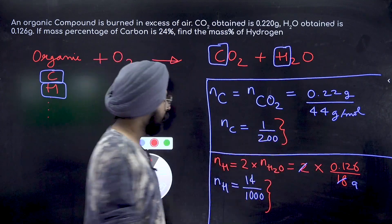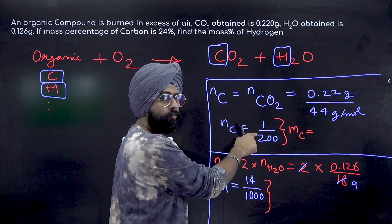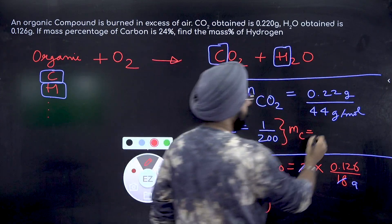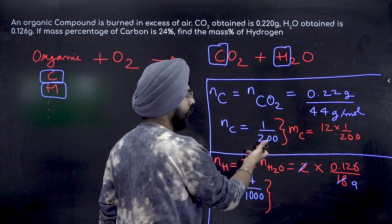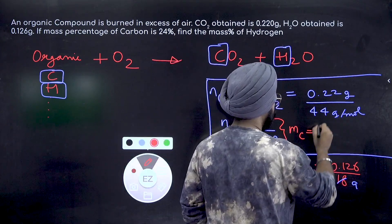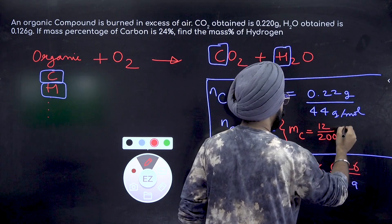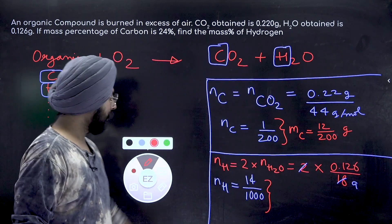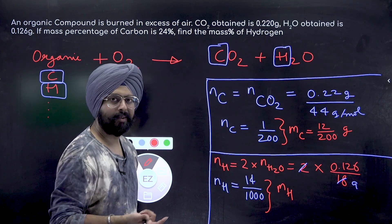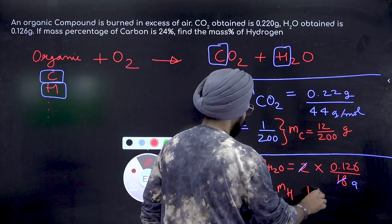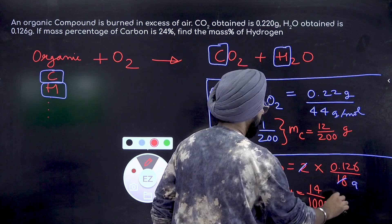To convert moles to mass, multiply by molar mass. The mass of carbon equals 12 × (1/200) = 12/200 grams. Similarly for hydrogen: the molar mass of hydrogen is 1 gram per mole, so mass of hydrogen equals 1 × (14/1000) = 14/1000 grams.